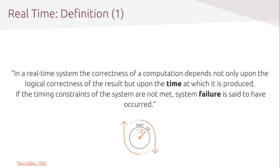Looking at this definition, the main thing I want you to take away is the reference to the timing constraint. A real-time system is a time-bound system with a well-defined, fixed time constraint. If the real-time system is unable to service its real-time tasks within this specified upper boundary of time — if processing is not done within this defined constraint — then the system has failed. So we have two key aspects: a time-bound, well-defined, fixed time constraint, and performing the real-time tasks within those constraints.